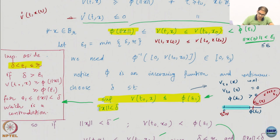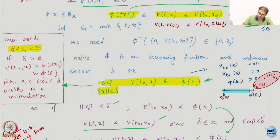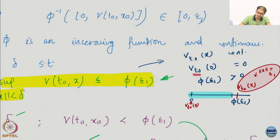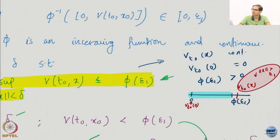So we know that φ is increasing and continuous. I have drawn a picture here. V(t₀,x) is continuous because I am fixing t₀, so it is a function of x. V(t₀,x) is 0 at 0 and φ(ε₁) is greater than 0. Therefore there has to exist some ‖x‖ bound such that V(t₀,x) lies within this range, just by continuity of V.